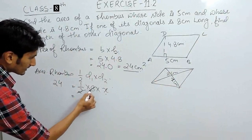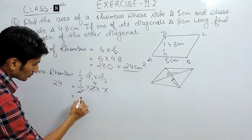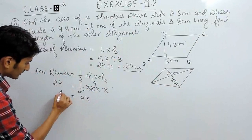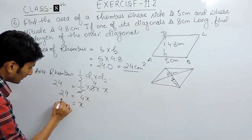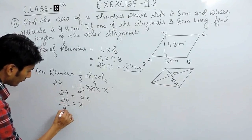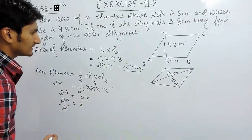Solving this, this is 4 times. So, this will be 4x. This will be 24. The value of x will be 24 divided by 4. So, this is 6 centimeters.